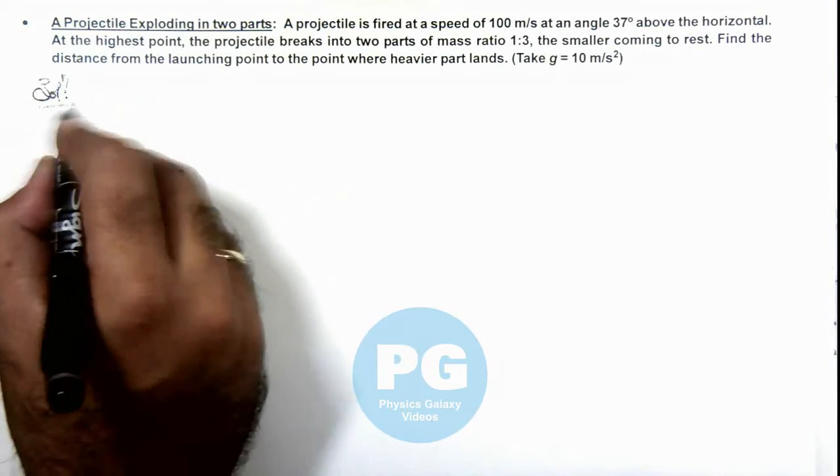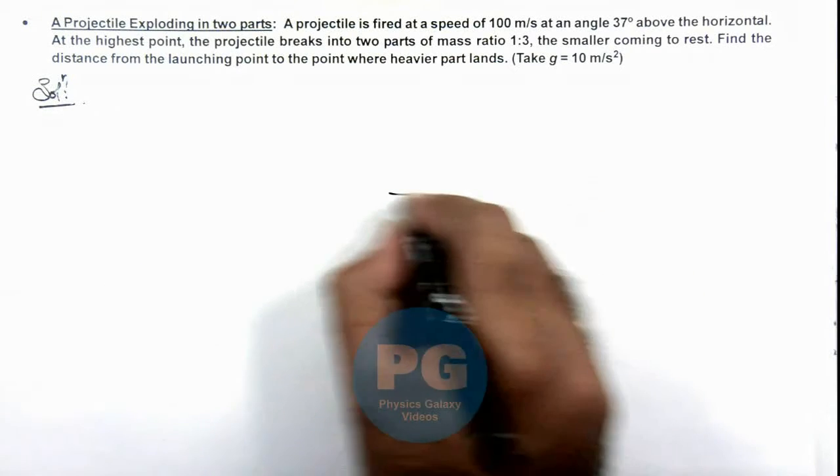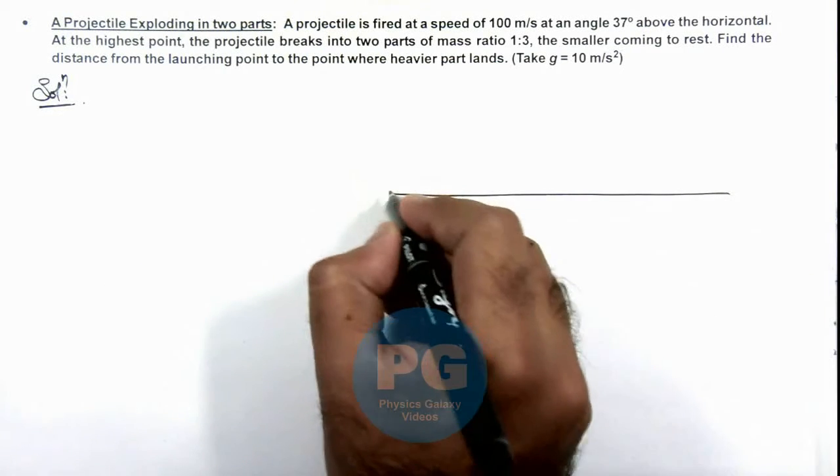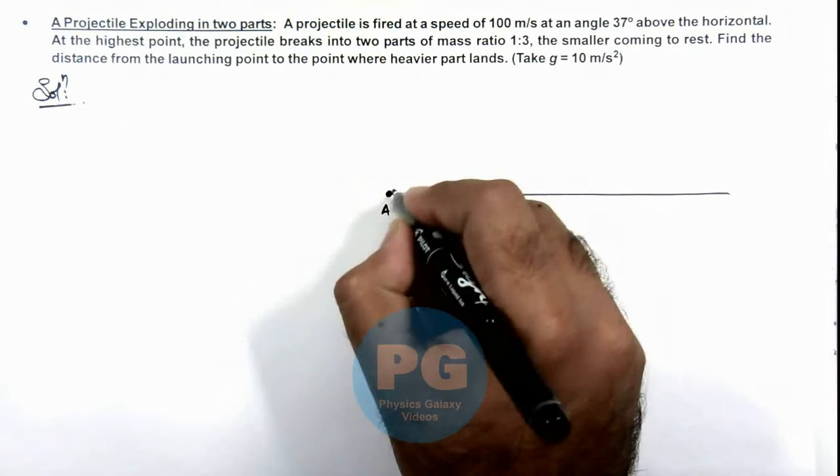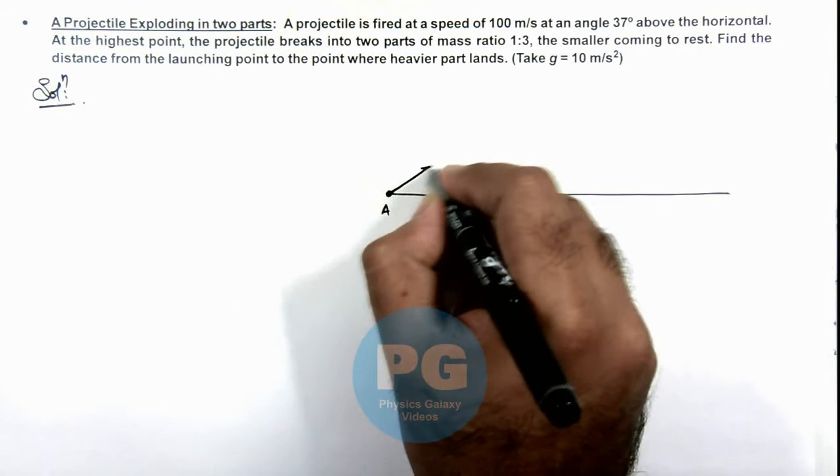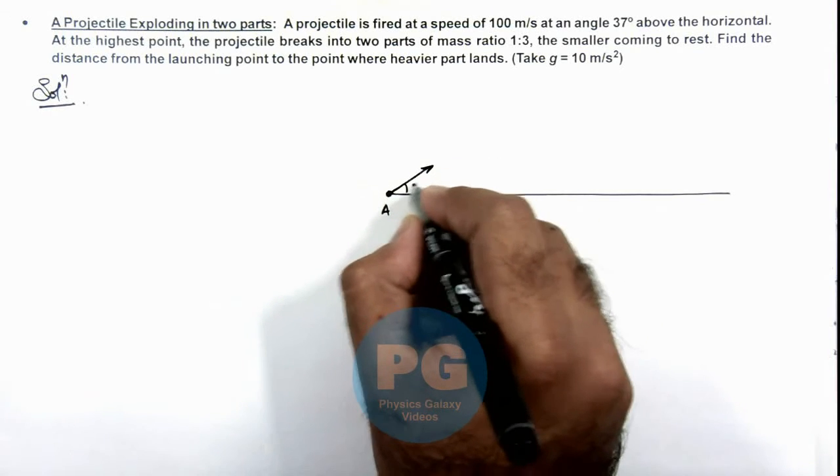Now in the solution, here we can draw the situation where from ground, say at point O, the projectile is fired at an angle 37 degrees.